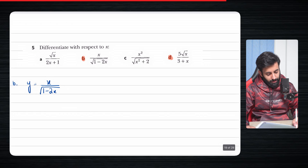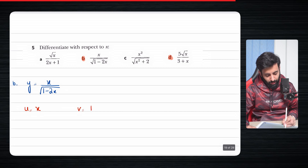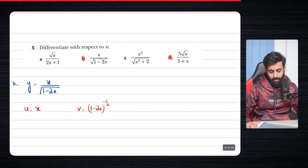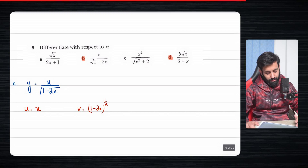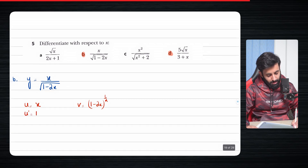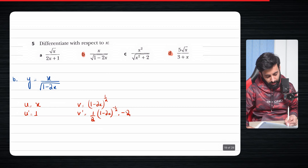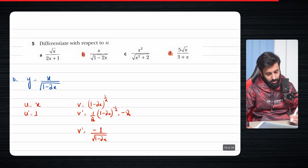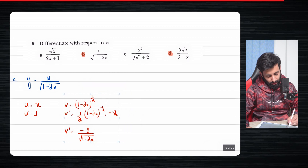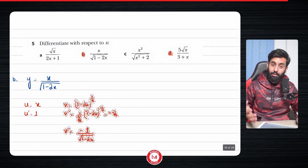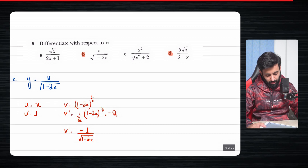Part b is y equals x over the square root of 1 minus 2x. Let's define u and v. So u is x and v is 1 minus 2x to the power positive half. Differentiating, u prime is just 1. For v prime, we apply the chain rule: half into 1 minus 2x to the power minus half, times the derivative of 1 minus 2x which is minus 2. The 2s cancel, giving v prime equals minus 1 over the square root of 1 minus 2x.